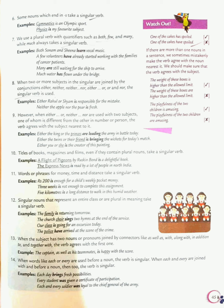But in the next point, we have a contrast. When either or, neither nor are used with two subjects, one of whom is different from the other in number or person, the verb agrees with the subject nearest to it. Keep this in mind. For example, either the king or the princess are leading the army in the battle today. Either the twins or their friend is bringing the wickets for today's match. So you can see in the first example, princess is a plural subject, so the plural verb 'are' is there. And in the next sentence, you have friend as a singular subject nearest to the verb, that's why singular verb will be used here.